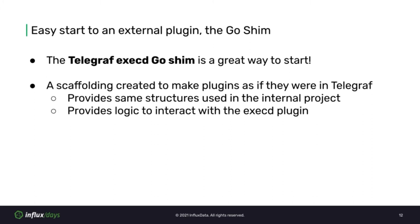I chose Go as the language to create the OctoPrint plugin. There is a big advantage to using Go because the Telegraph project provides a tool to help you quickly get started: it is called the Telegraph ExecD Go Shim. It lets you write the external plugin just as if it were living inside the Telegraph project. You get access to the same structures that internal plugins use, and you won't have to worry about writing the logic to interact with the ExecD plugin. All the other plugins already written for Telegraph can also be used as examples.